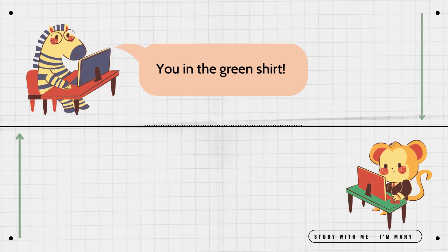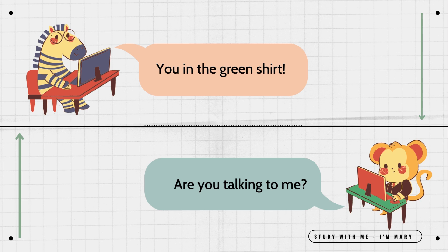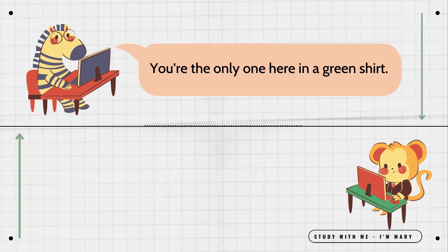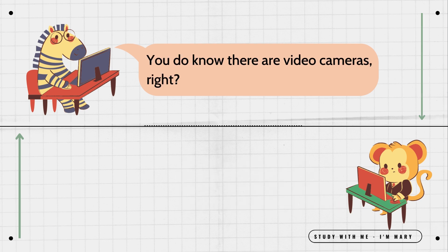You in the green shirt, are you talking to me? You're the only one here in a green shirt. What do you want? I saw you scratch my car with a key. You have no proof.